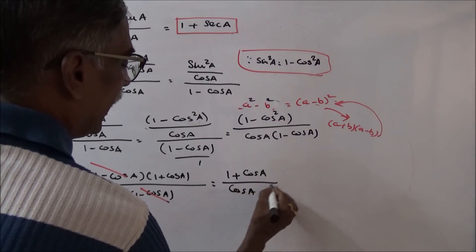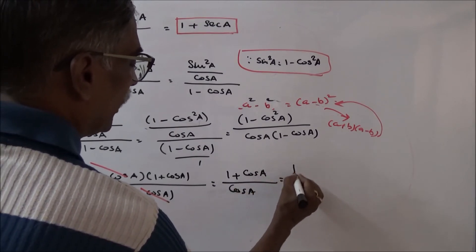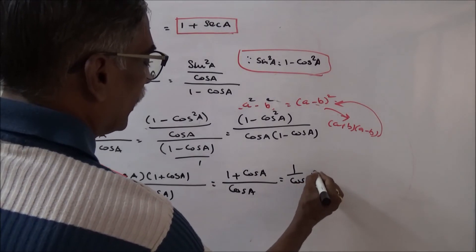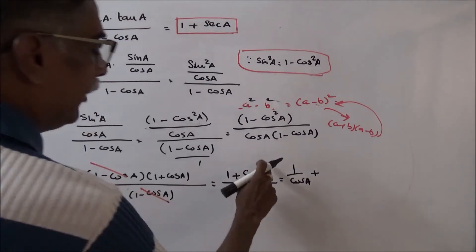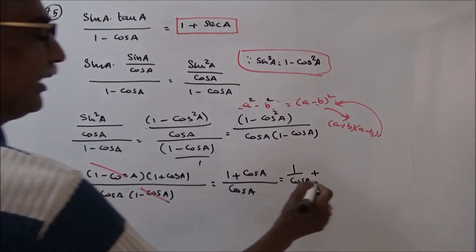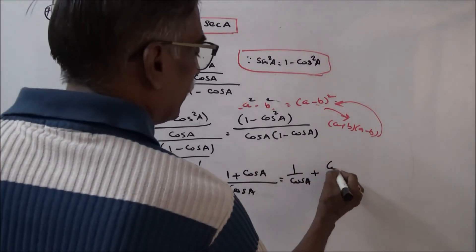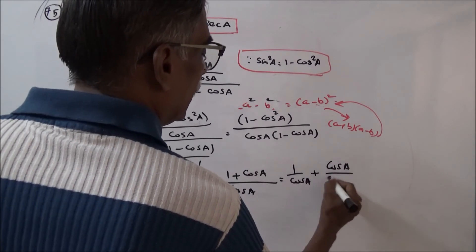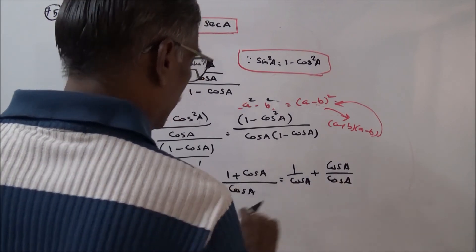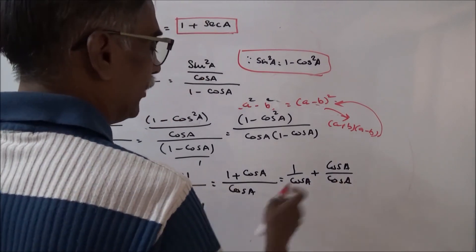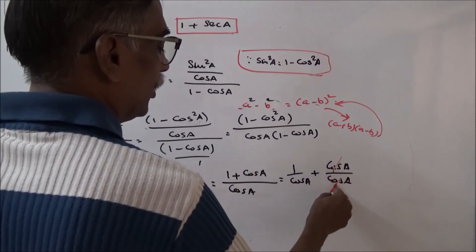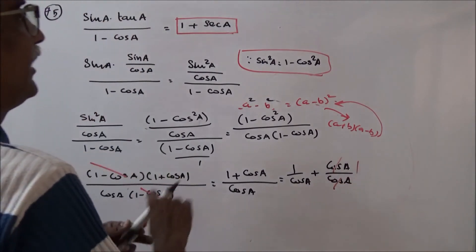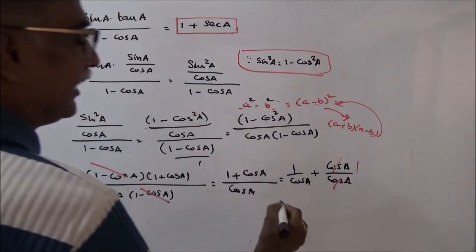Simplifying further, I split the fraction: 1 by cos A plus cos A by cos A. Cos A by cos A is simply equal to 1, and 1 by cos A is equal to secant A.